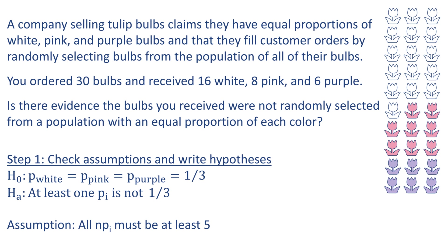In order to use the chi-square distribution to approximate the sampling distribution, all n times p sub i — which are the expected counts — must be at least five. n represents our total sample size and p sub i represents each of the proportions in the null hypothesis. In this case, all three hypothesized population proportion values are one-third. All n times p sub i equals 30 times one-third, which is 10. This is at least five, so this assumption has been met, and we can use the chi-square distribution to approximate the sampling distribution.